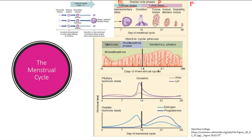So we'll start with the follicular phase. I'm going to start with FSH, which is follicle stimulating hormone — so obviously it's going to stimulate the follicles. It's going to cause them to nicely mature, going from primary follicles to secondary follicles to tertiary follicles. And as they mature, they're going to make estrogen. It's actually the granulosa cells of the follicle that are going to make estrogen.